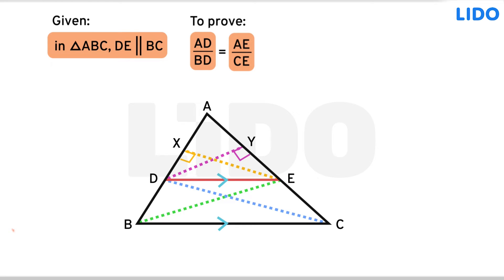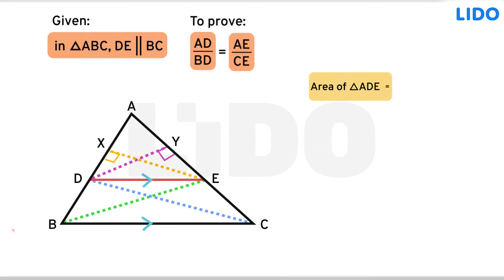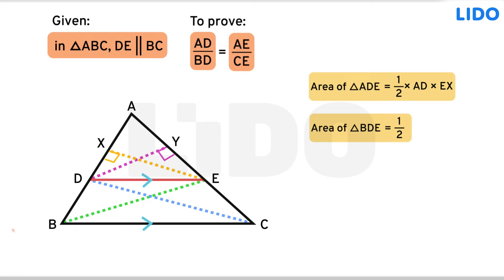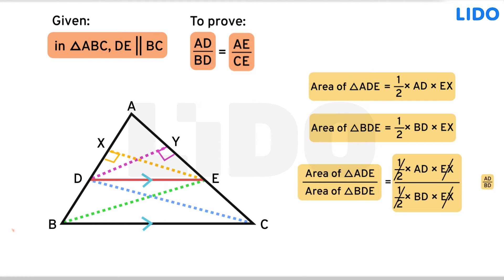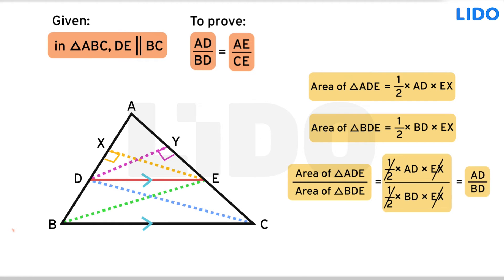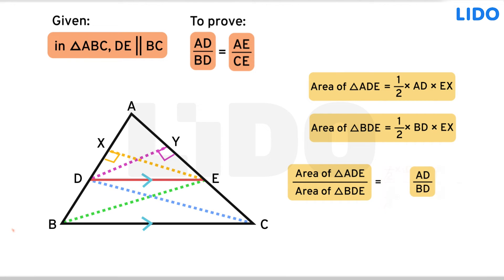The area of triangle ADE is equal to half times AD times EX. Similarly, the area of triangle BDE is half times BD times EX. The ratio of areas of these two triangles is equal to AD over BD. Let this be equation 1.